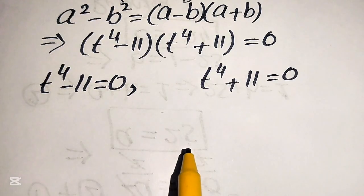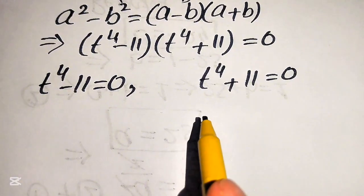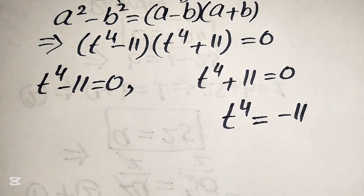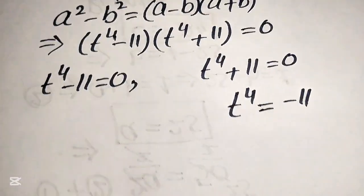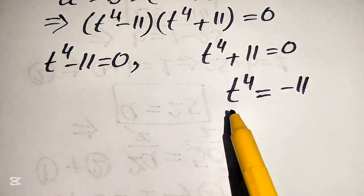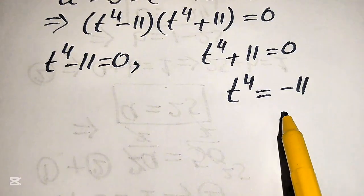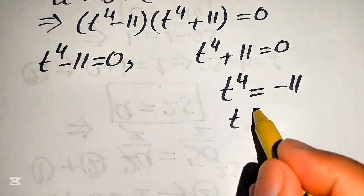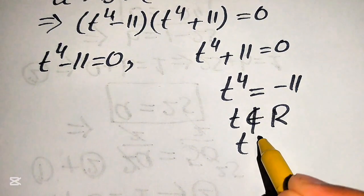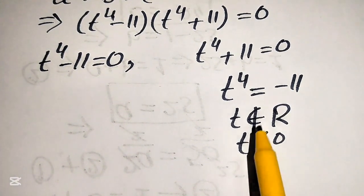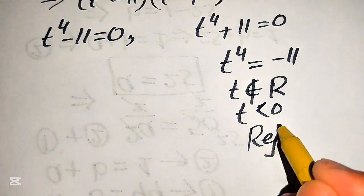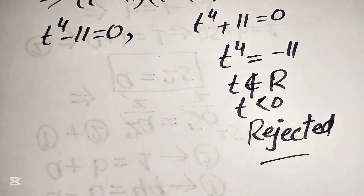We first focus on the second case. Moving the plus 11 to the right-hand side gives t to the power of 4 equals minus 11. But recall the condition that t must be greater than or equal to 0 — t is a positive real number. Since t to the power of 4 being negative means t is not real and not greater than or equal to 0, this case does not satisfy the question's conditions and is rejected.